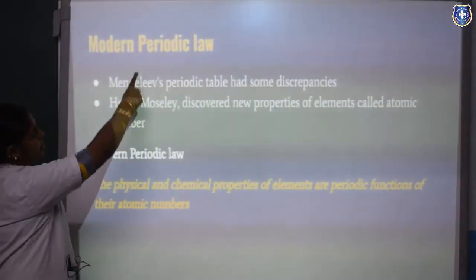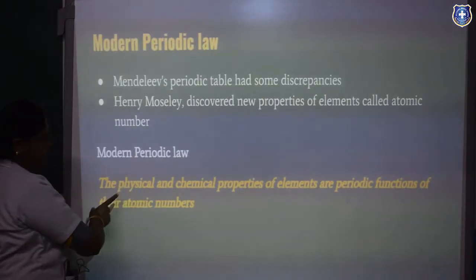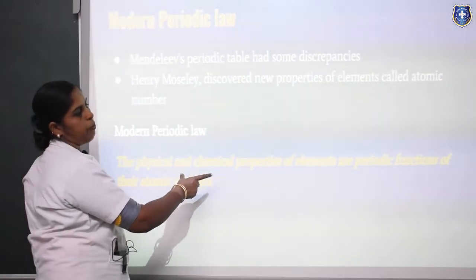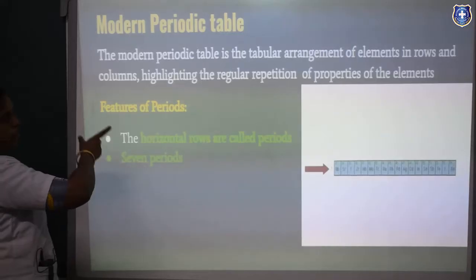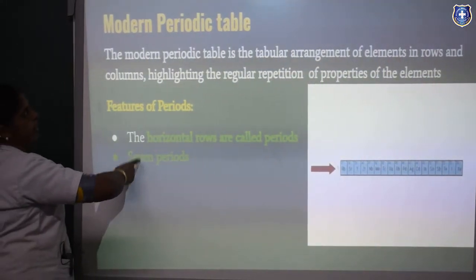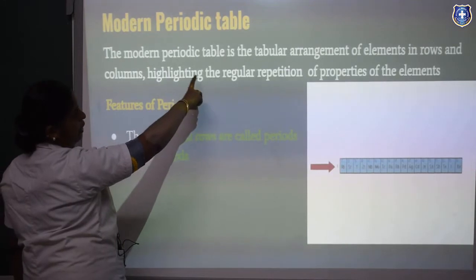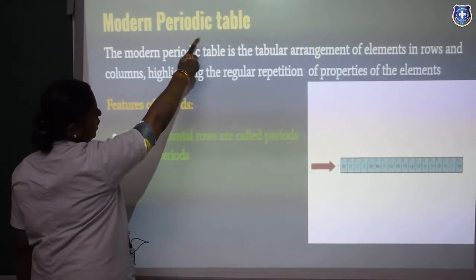Henry Moseley introduced modern periodic law, which states that the physical and chemical properties of the elements are periodic functions of their atomic numbers. That is, the physical and chemical properties of the elements depend on their atomic numbers. Based on this modern periodic law, the elements are arranged according to their atomic number in a long form known as the modern periodic table.